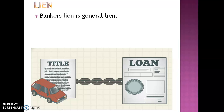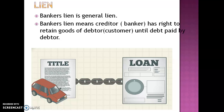Now we start with the first type: lien. Banker's lien is a general lien. The definition of lien is: the banker, as creditor, has the right to retain the goods of the debtor — that is, the customer — until the debt is paid. For example, a customer has taken a loan from the bank against his car. The customer becomes a debtor and the bank becomes a creditor.